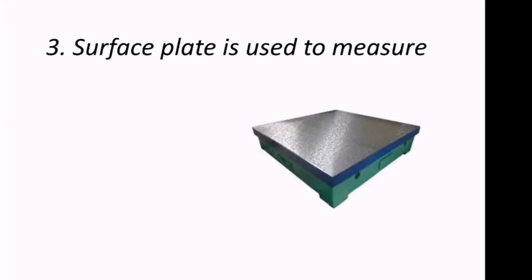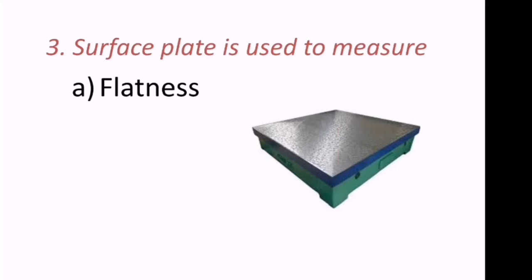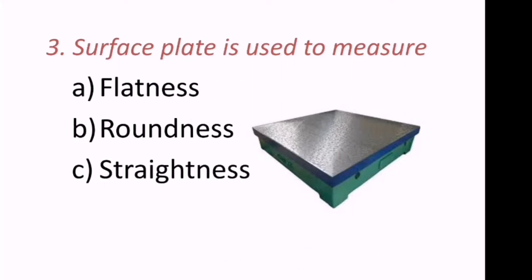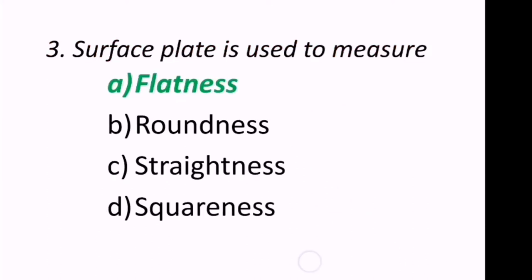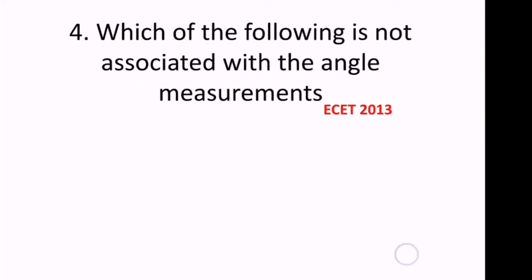Third question: A surface plate is used to measure what? We can see the surface plate in the figure. The options are flatness, roundness, straightness, or squareness. The surface plate is used to measure flatness — A is the correct answer.